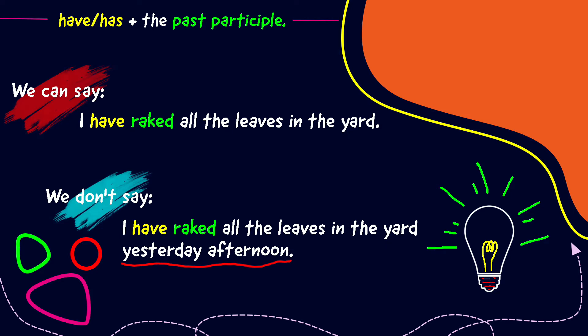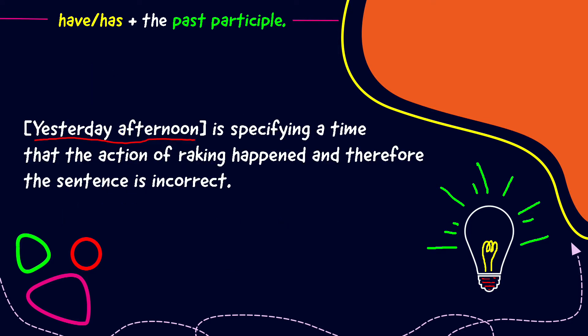We can say, I have raked all the leaves in the yard. Yesterday afternoon. Yesterday afternoon is specifying a time that the action of raking happened and therefore the sentence is incorrect.